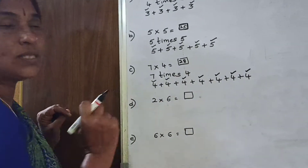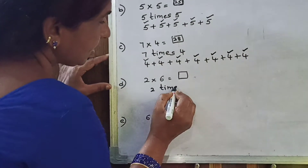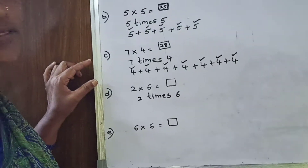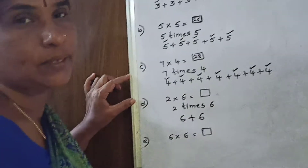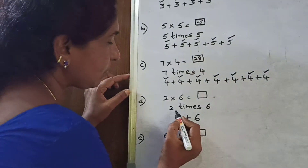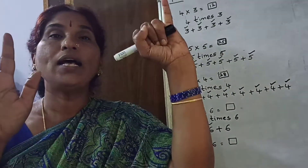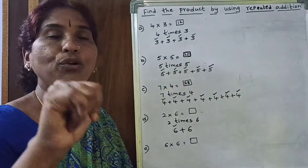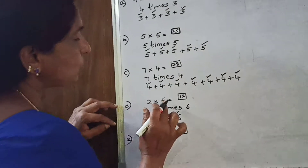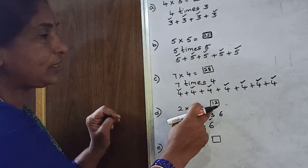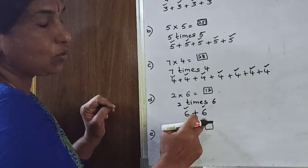Now coming to 2 sixes are. 2 times 6. So you have to take 2 times 6: 1 time plus 2 times. Now you have to add. First number is 6 — completed. 6 in mind, 6 in hand, 6 after: 7, 8, 9, 10, 11, 12. Second one also completed. 6 plus 6 is equal to 12. So 2 sixes are 12, and 2 times 6 is equal to 12.